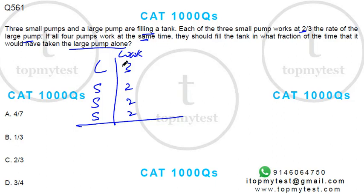Now when all four of them are working together, they will fill six plus three, nine units of work. Right, now if only the large pump is working, it will fill three units of work.